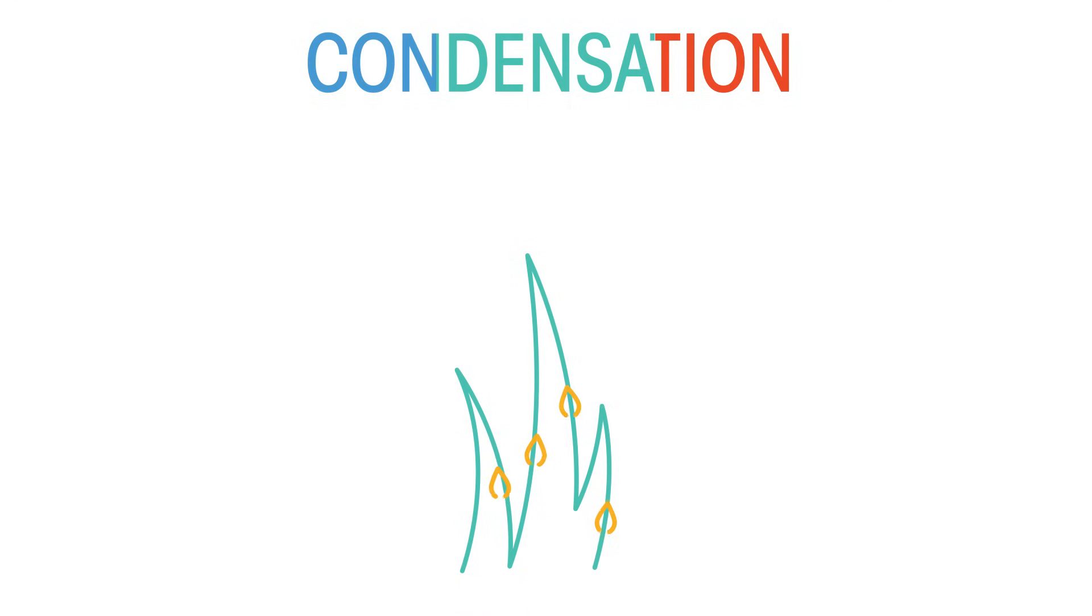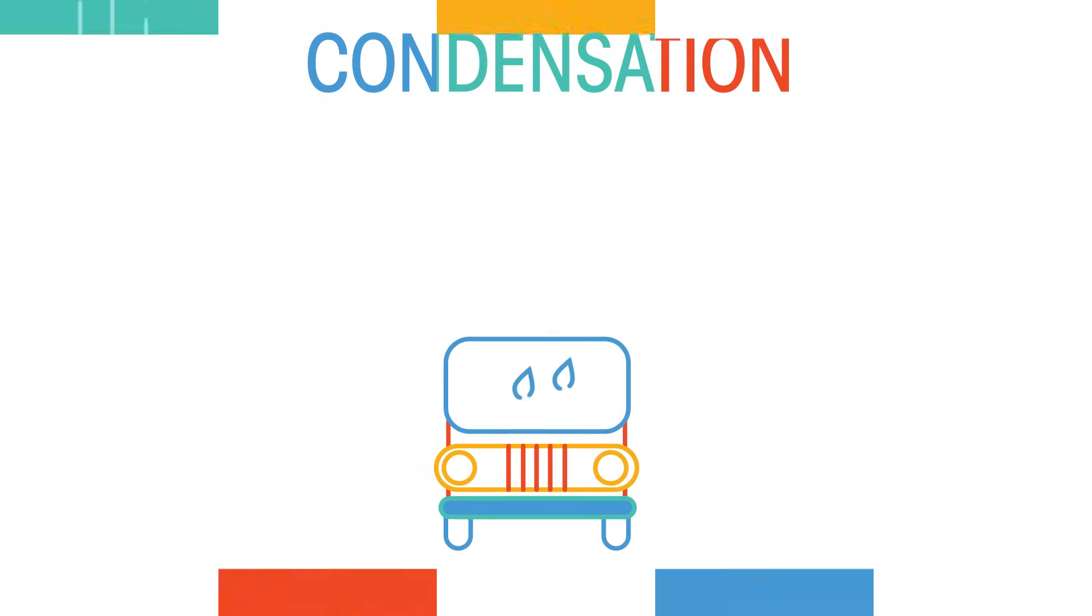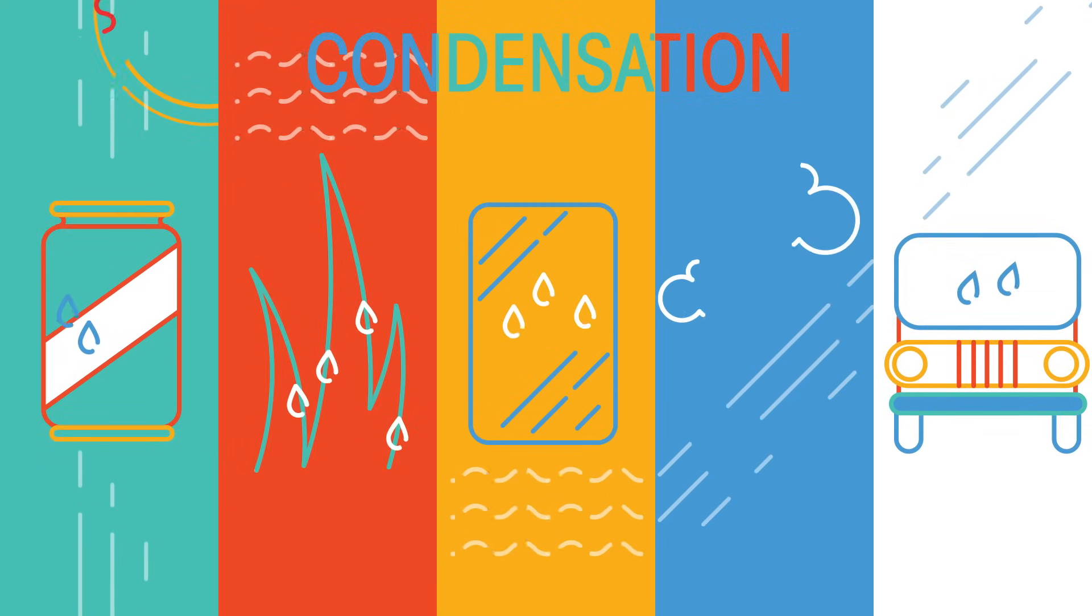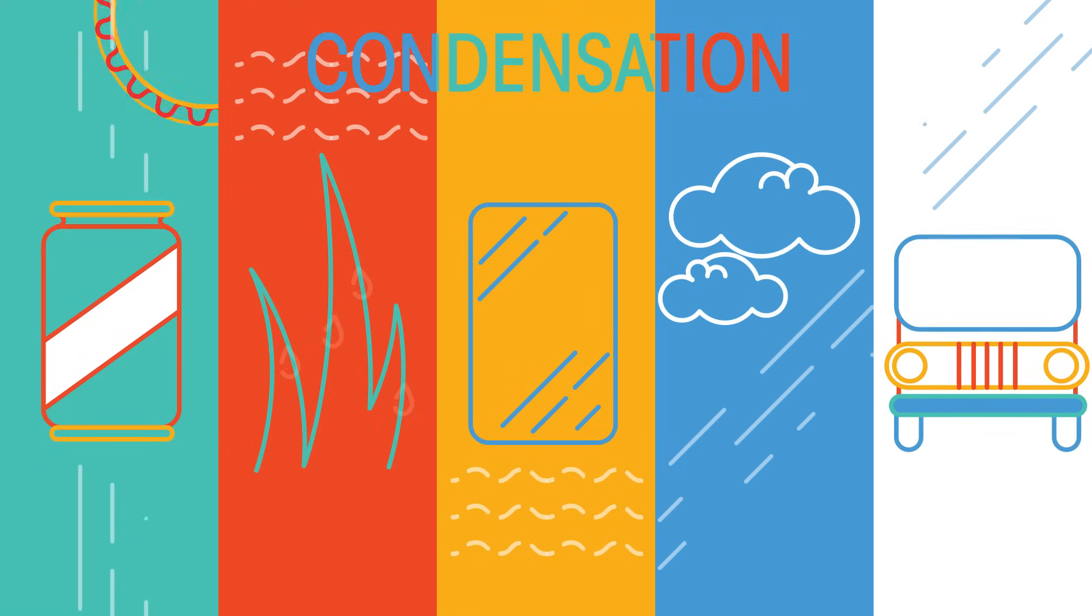Those water droplets on the outsides, or the dew on the grass in the morning, or the steamed up mirror after a hot bath. Even the clouds in the sky, or a foggy windscreen in a car. These are all examples of condensation. Water vapor in the air has cooled down to form liquid droplets of water.